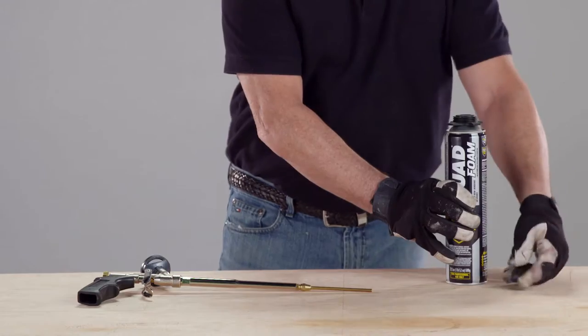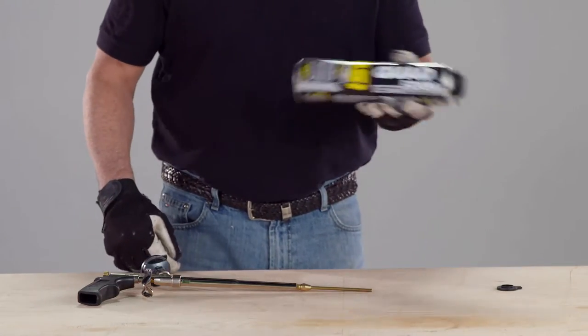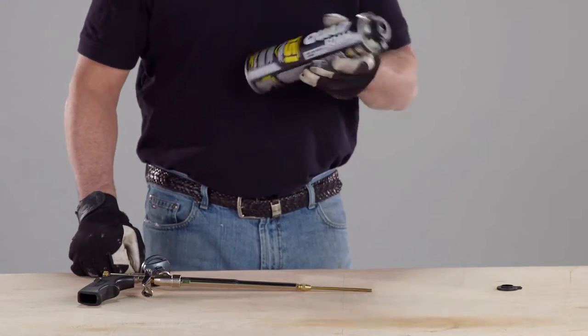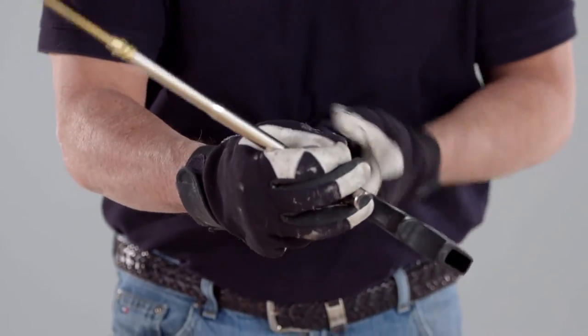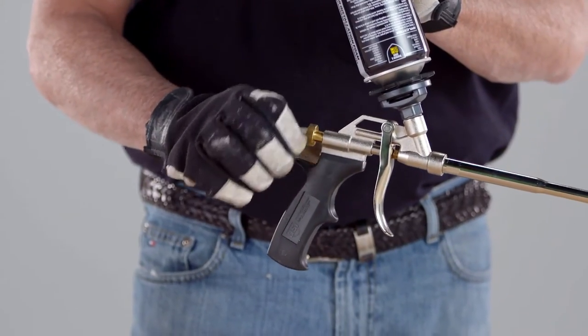Finally, you're ready to apply the OSI Quad Foam to the interior. First, shake the can 15 to 20 times. Then screw the can to the applicator gun and open the valve. And you're ready.